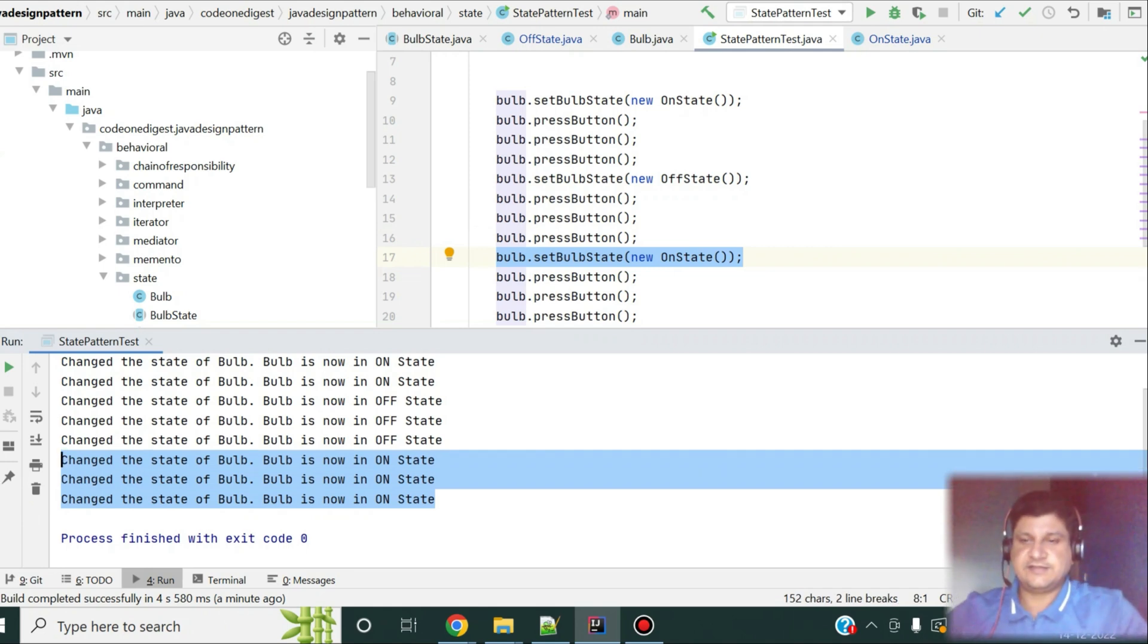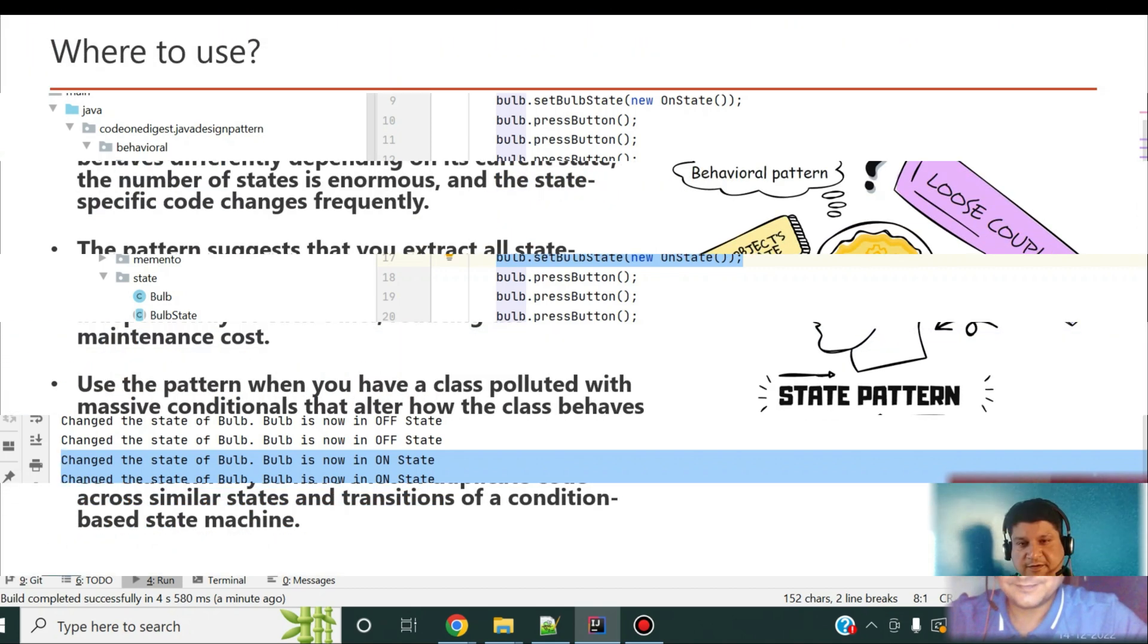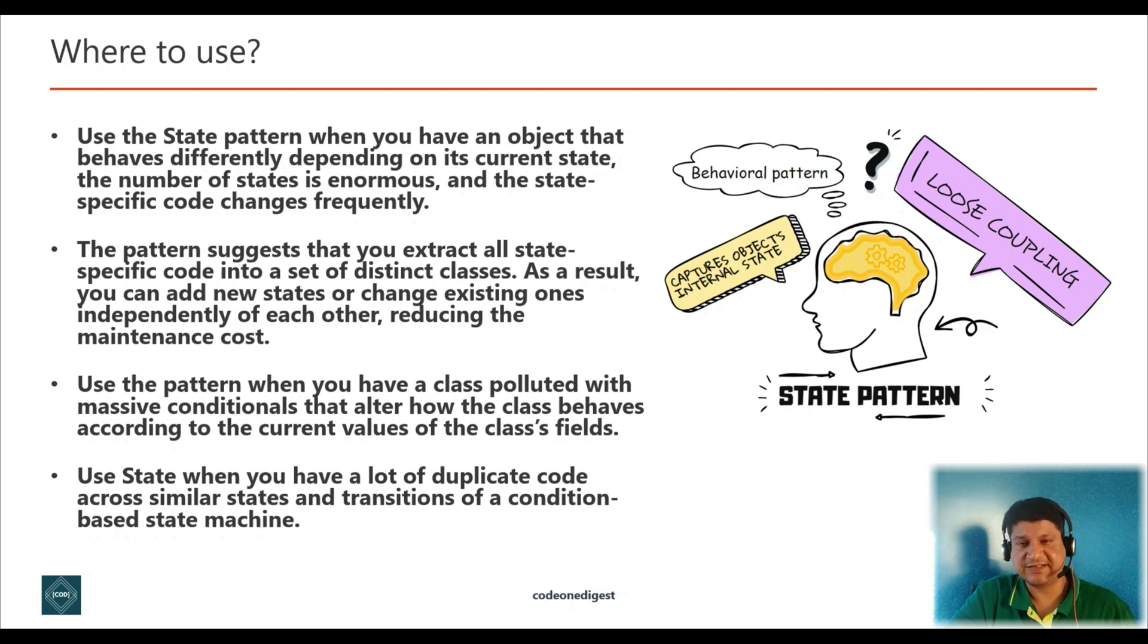So, likewise, you can implement this state pattern wherever it is applicable, wherever you feel that you can segregate the logic into separate state classes where you have too many states for an object. And that way, you can alter the states and context classes independently without impacting each other. And in future, you can add more and more state classes as well. So, when do you think you can use state design pattern? Whenever you have an object that behaves differently depending on its current state, the number of states is enormous and the state-specific code changes frequently, that time you can think of using this pattern. The pattern suggests that you extract all this state-specific code into a set of distinct classes. As a result, you can add new states or change existing ones independently of each other, reducing the maintenance cost.